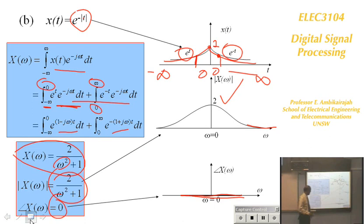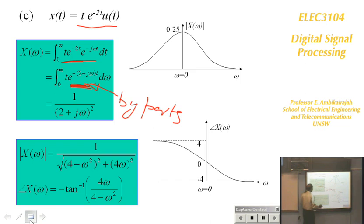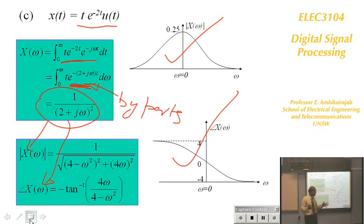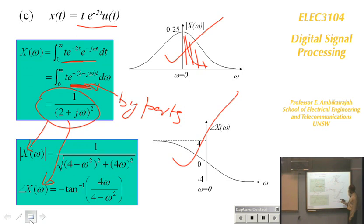For the third signal x(t) = t·e^(−t), evaluate the Fourier transform by integration by parts. The result gives a complex X(ω) from which you can compute both the magnitude response and phase response. When plotted, the magnitude gives a low-pass-like characteristic, and the phase decreases from zero at DC, meaning different frequencies experience different phase shifts.